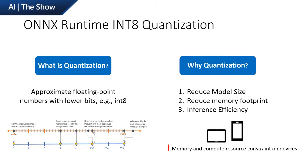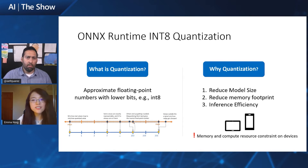Quantization might introduce accuracy loss because low bit width limits the precision and range of values, so you need to make the trade-off for your scenario. ONNX Runtime uses int-8 quantization. Compared to FP32, int-8 representation reduces storage by four times. In terms of inference performance, integer computation is more efficient than floating-point math.